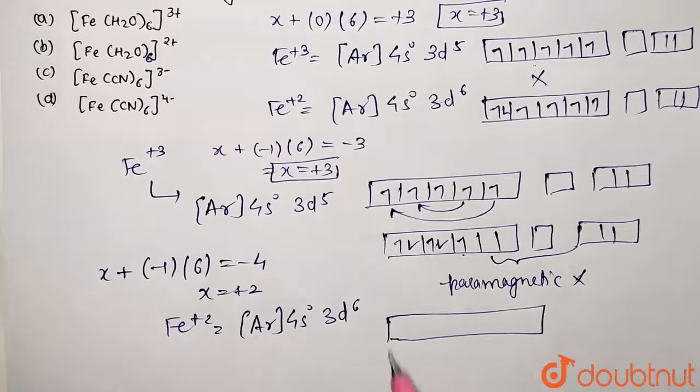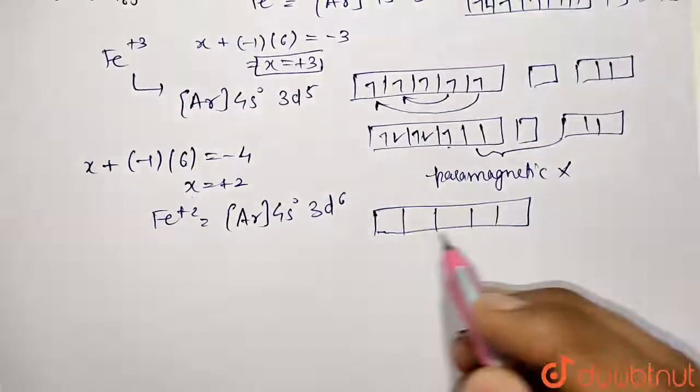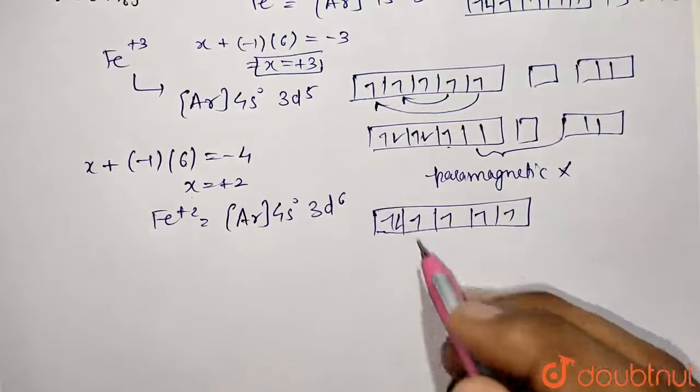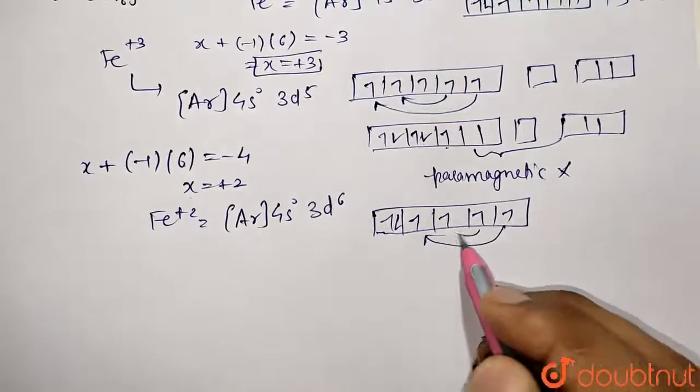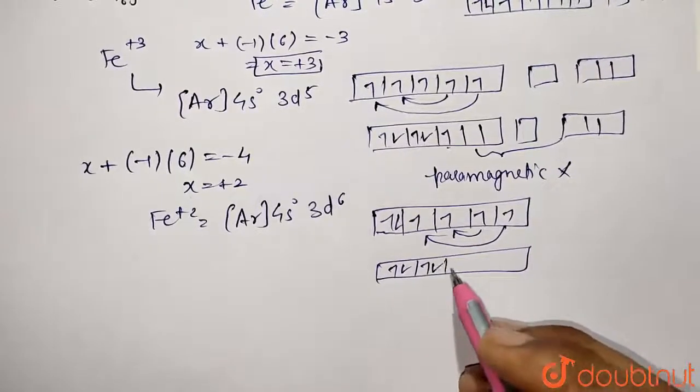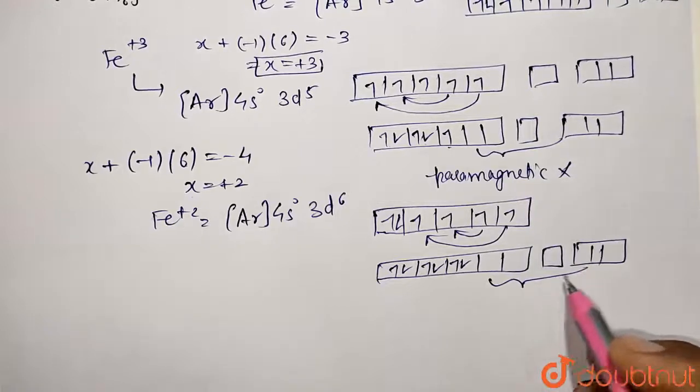How you can represent them, we have already seen. But again same thing will come into effect - you need to see the nature of the ligand. Here it's going to be strong field so pairing is going to take place. So this is pairing with this one, this is pairing with this one. So now what you are going to have: paired set of orbitals we are having, so these two will be free.